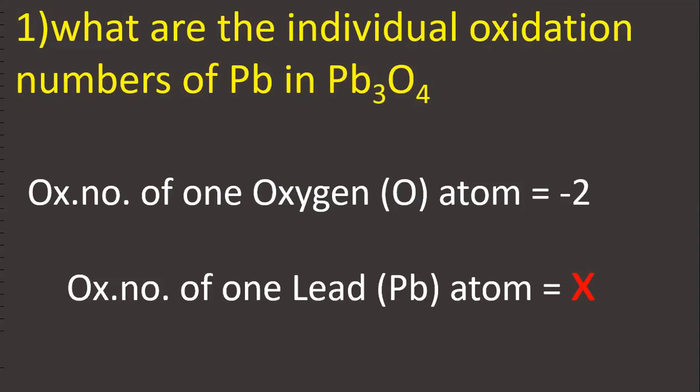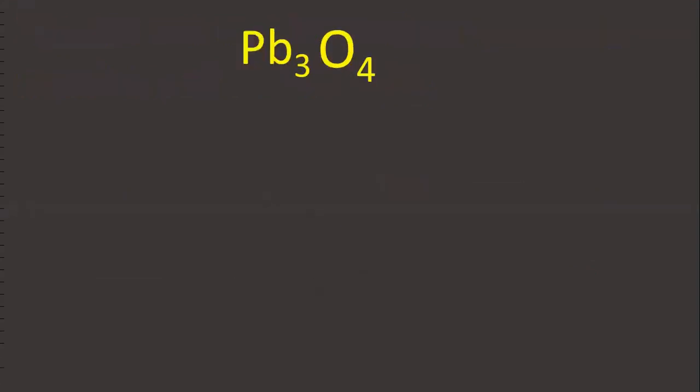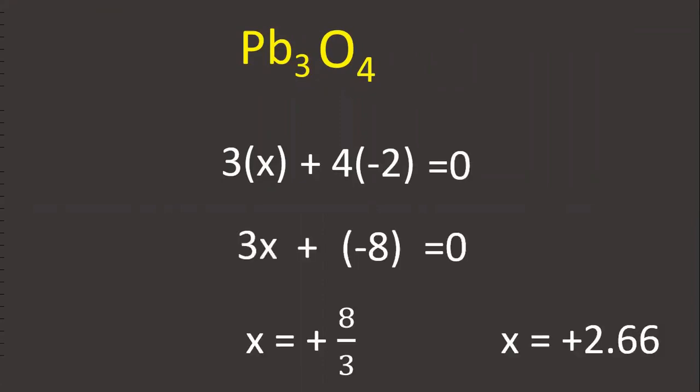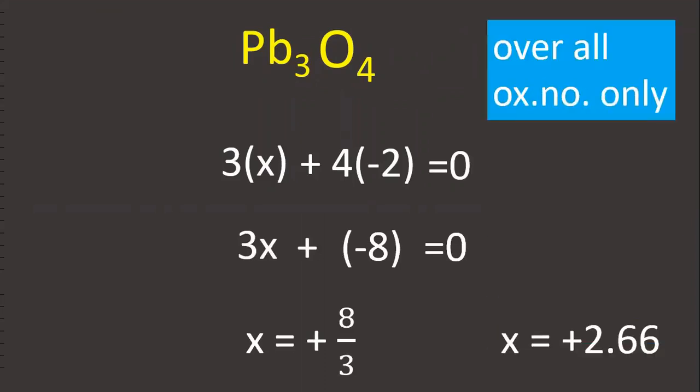Imagine it is x. In Pb₃O₄, 3 lead atoms 3x plus 4 oxygen atoms into -2, that is equal to 0. Simplify this. This is +8/3. This is overall oxidation number only.